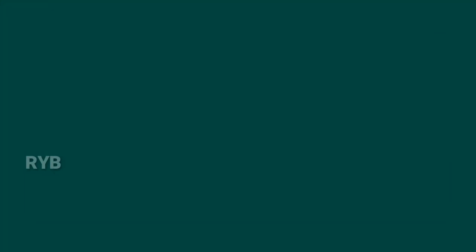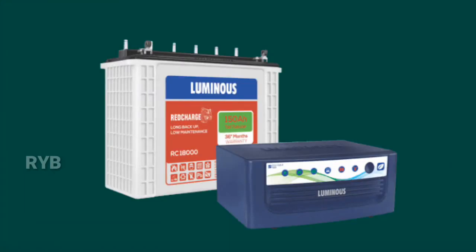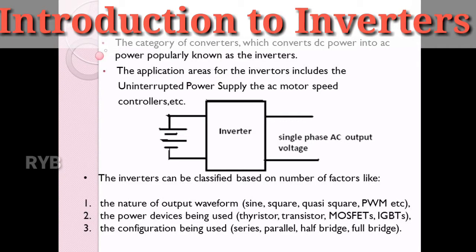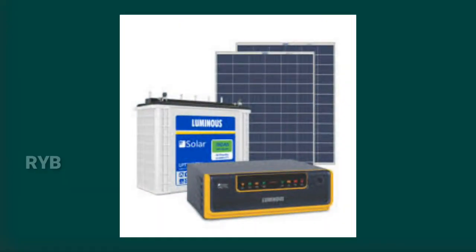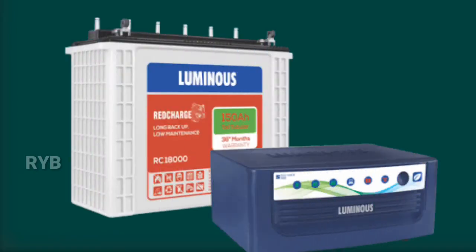An inverter converts DC voltage or current to AC voltage or current. It converts power from a DC source into an AC load. The aim of the circuit is to supply AC power similar to what we receive at homes. In our homes, electricity supply is stored in a battery; whenever power is switched off, the inverter converts the stored DC energy into AC so your lights and lamps all glow.